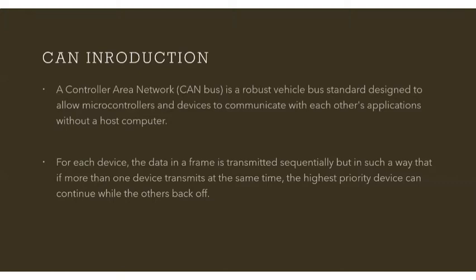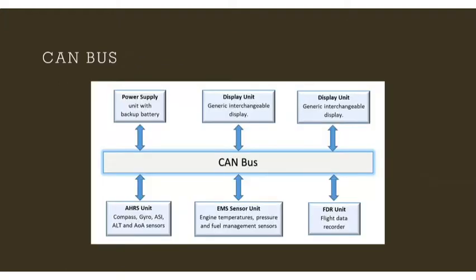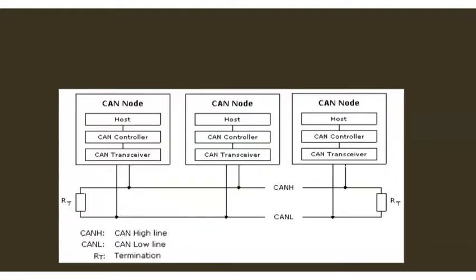In a CAN bus, loads of peripherals are connected to it — power supply, display unit, FDR, EMS sensor, AHRS — these are all components of automobiles. In order to communicate between these units, we use a CAN bus. Every element or device connected to a CAN bus will act as a CAN node. Each CAN node has a host, a CAN controller, and a CAN transceiver. The nodes are connected through the bus, which has a high and low line with termination at both ends.